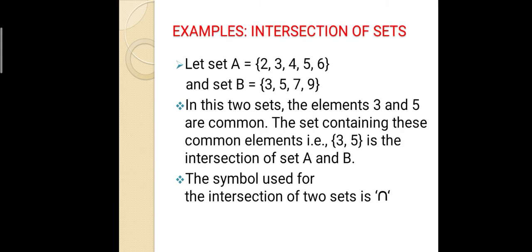Example of Intersection of Sets: Let set A = {2, 3, 4, 5, 6} and set B = {3, 5, 7, 9}. In these two sets, the elements 3 and 5 are common. The set containing these common elements, {3, 5}, is the intersection of set A and B. So A ∩ B = {3, 5}.